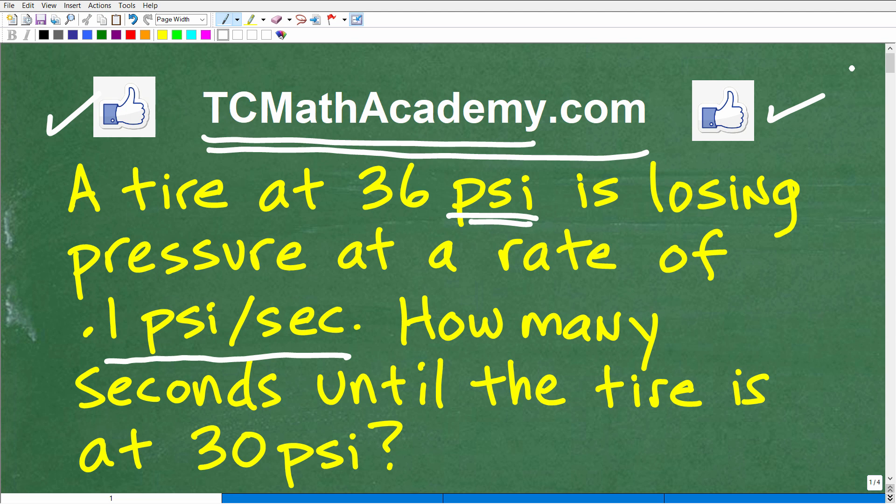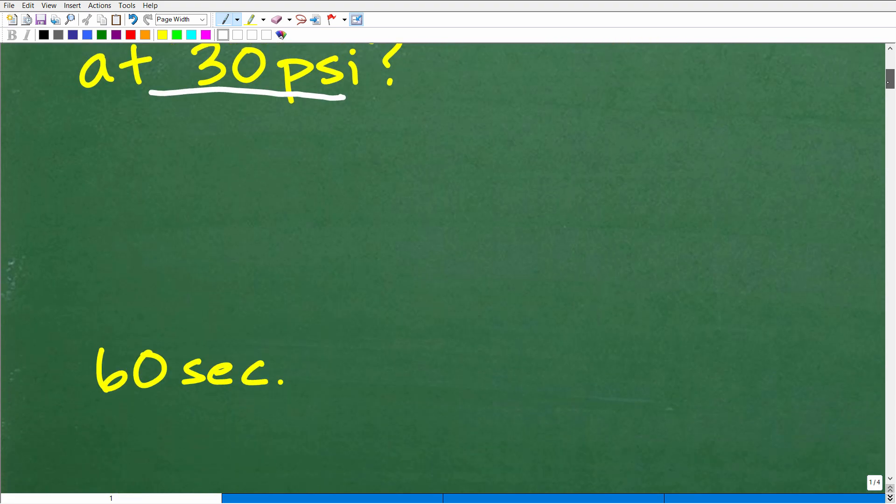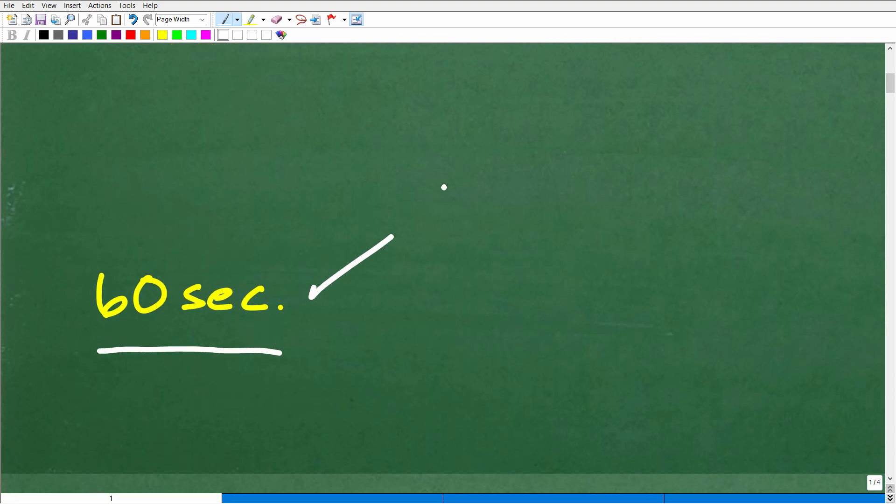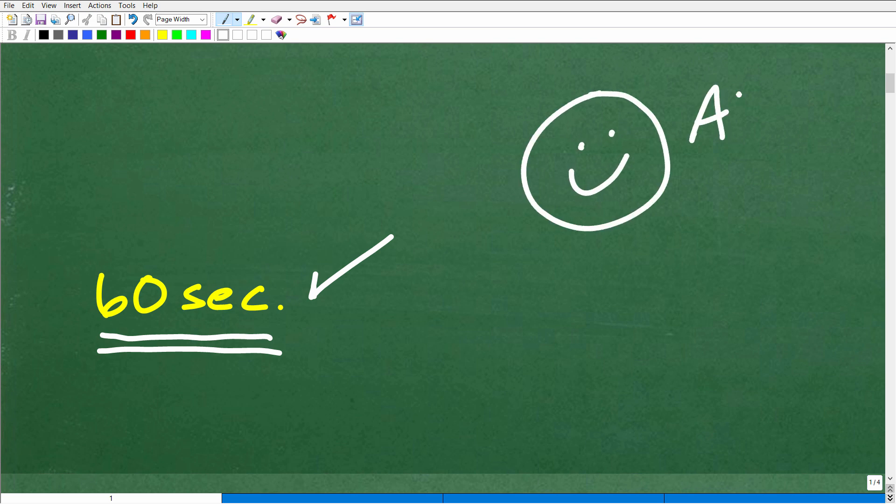Hopefully you had a chance to look at this problem. When you're dealing with any math word problem, you want to read it at least three times. If you need to pause the video to think about this, that's perfectly fine. But let's take a look at the answer. The question is, how many seconds until the tire is at 30 psi? It's currently at 36 psi. Well, the answer is 60 seconds. That is the correct answer. One minute, or 60 seconds. If you got this right, that's outstanding. You can tell your friends and family that you solved an interesting math word problem about tires and psi.